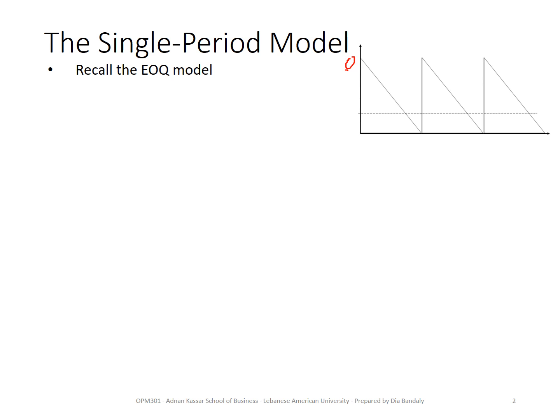Because everything is known in the EOQ model, we receive our new shipment just when we have almost nothing on hand — virtually nothing on hand — which would minimize our cost. And these cycles repeat again and again.